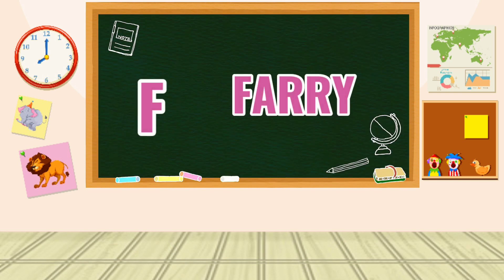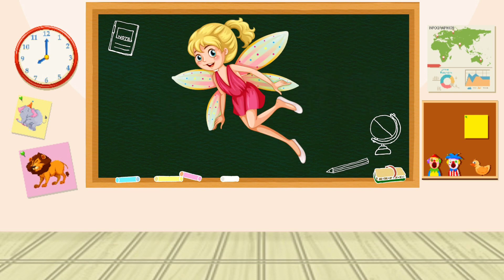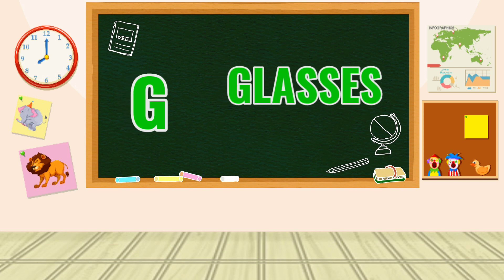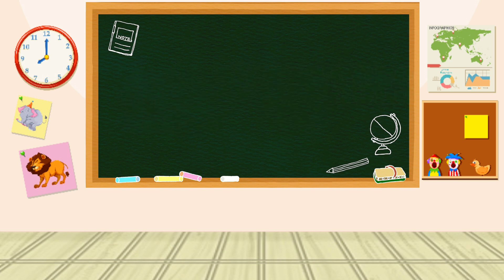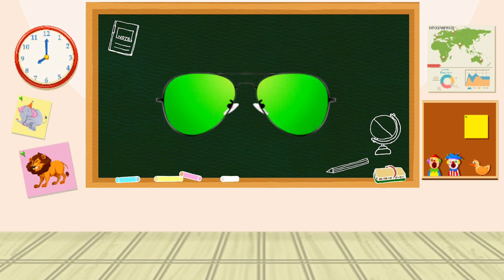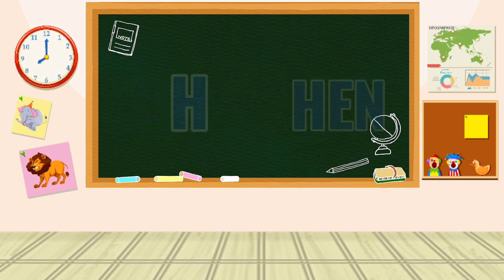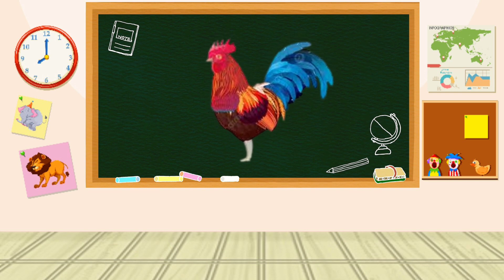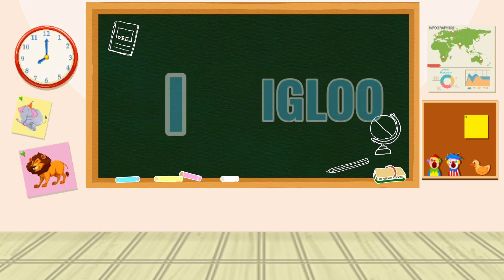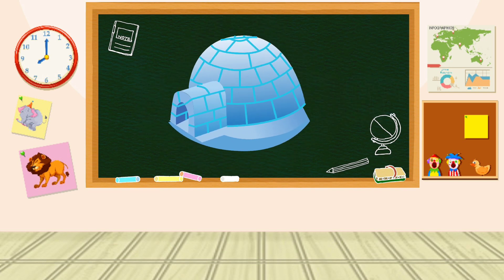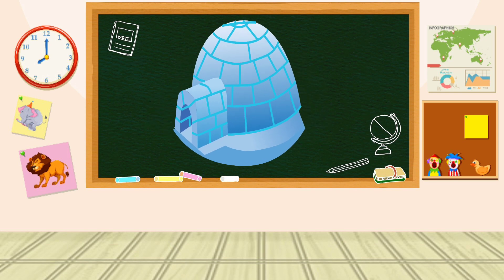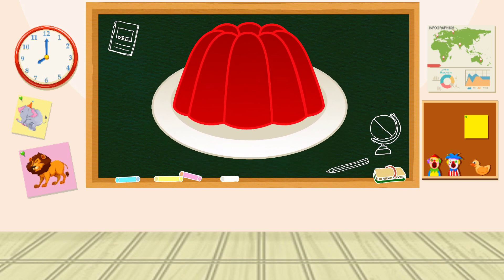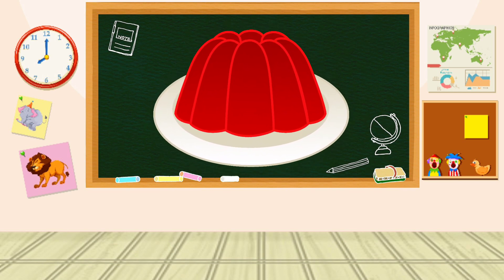F is for Fairy. F-Fairy, F-Fairy. G is for Glasses. G-G-Glasses, G-Glasses. H is for Hand. J is for Jelly. J-Jelly.